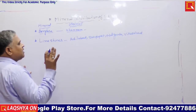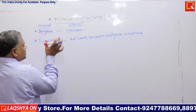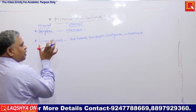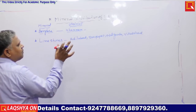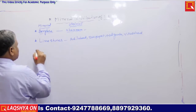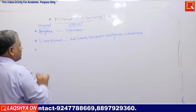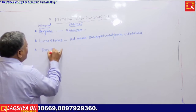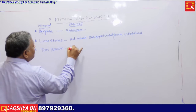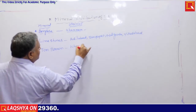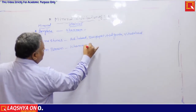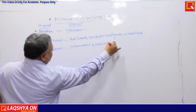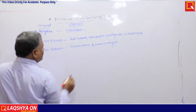Barites deposits are available in Kammam district. Limestone predominates at Adilabad, Suryapet, Nalagonda, and Vikarabad districts. Next, lignite (ton brown) is found in Kammam and Karimnagar districts.